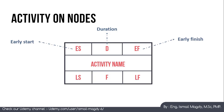EF (Early Finish) is the earliest possible time for the activity to finish, and it equals Early Start plus Duration. In the bottom-left corner is LS (Late Start), the latest time the activity can start without affecting the overall schedule. For critical activities, LS equals ES; for non-critical activities, LS equals ES plus float.